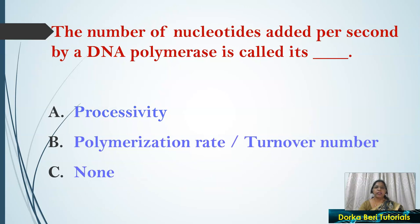Next question: The number of nucleotides added per second by DNA polymerase is called — options: processivity, polymerization rate, or turnover number. The answer is polymerization rate or turnover number — it is the number of nucleotides added per second by a DNA polymerase.